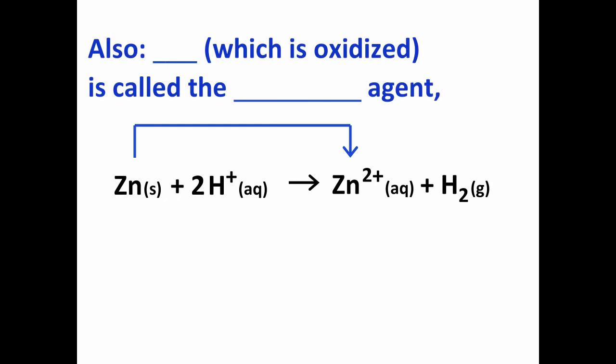Another thing to note is that the zinc is oxidized, and by being oxidized, by losing electrons itself, it provides electrons for the hydrogen ion to gain. So zinc is called the reducing agent because it helps the other substance, the hydrogen ion, be reduced.